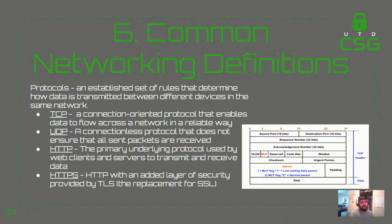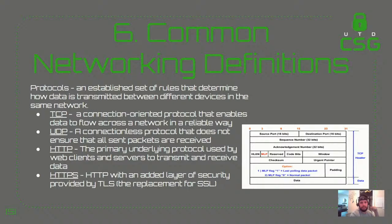TCP — Transmission Control Protocol — is a connection-oriented protocol that enables data to flow across a network in a reliable way. It relies on a three-way handshake: SYN, SYN-ACK, ACK. What that does is ensure that both client and server are connected such that if a packet drops, it'll be retransmitted. So it guarantees you get all the data you want — which is why TCP kind of dominates the TCP/IP world.